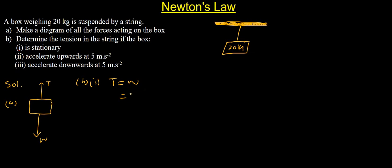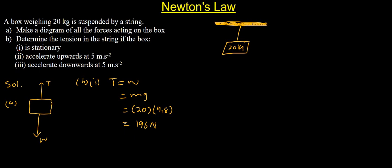Our weight is given by mg, where m is our mass of 20 kg and g is our gravitational acceleration which is 9.8 meters per second squared. So when you multiply 20 by 9.8 we get 196 newtons. That's our tension when the box is stationary.